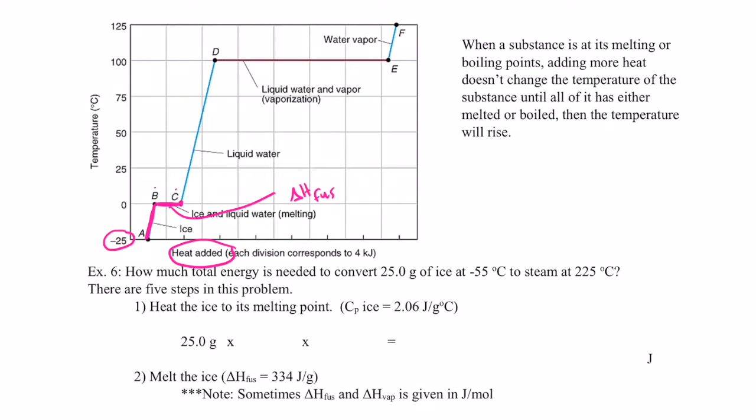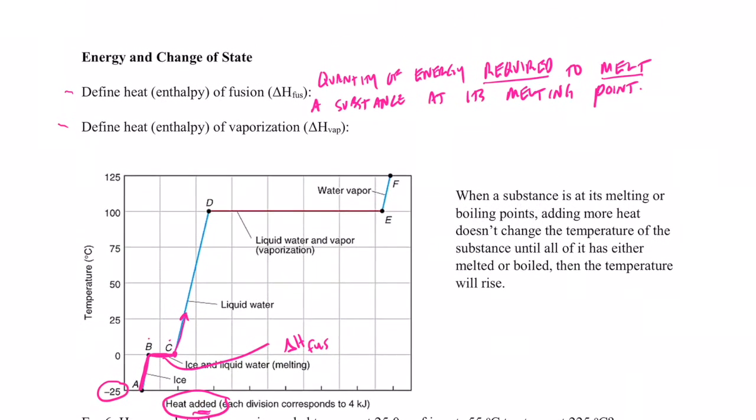Until I reach point C, what's happened there? All of the ice is now turned into liquid water. And then when I add more energy, the temperature starts to rise again. So that's heat of fusion. The energy required to melt the substance at its melting point. A couple of key words. Energy required. It's an endothermic process to melt the substance. And we're not changing the temperature. We're at the melting point.